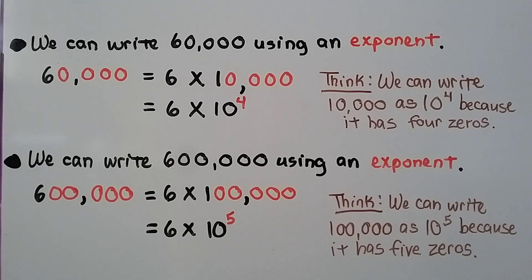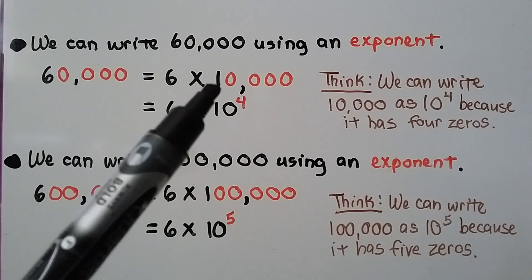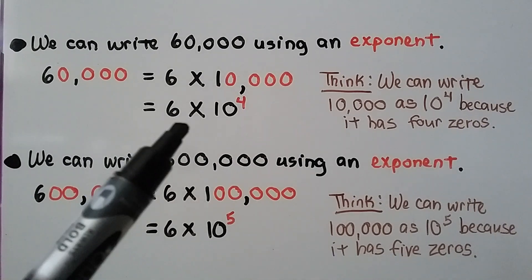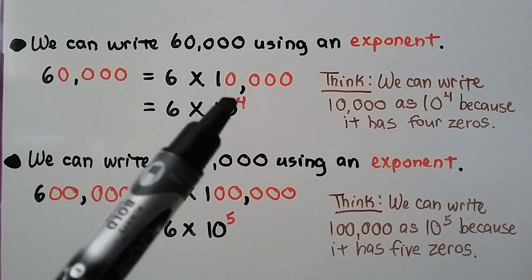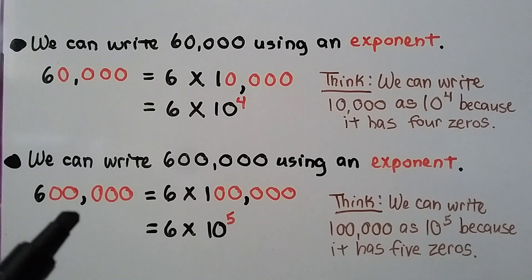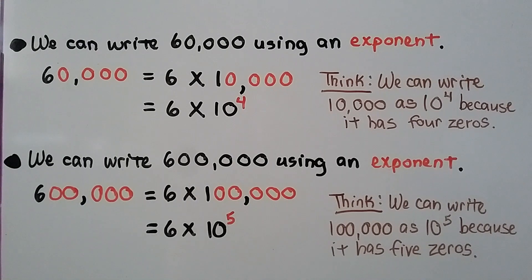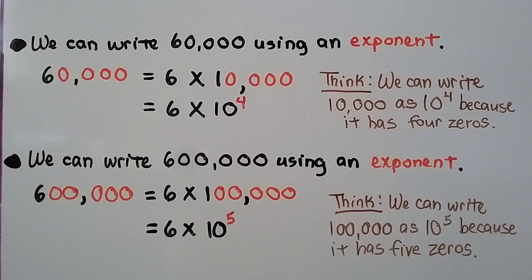We can write 60,000 using an exponent. 60,000 has 4 zeros, so 6 will be our whole number times 10,000. Since 10,000 has 4 zeros, that would be 6 times 10 to the 4th power. And we can write 600,000 using an exponent: 600,000 has 5 zeros, so that's 6 times 10 to the 5th power, because 100,000 has 5 zeros.